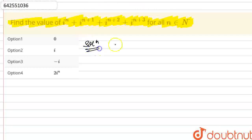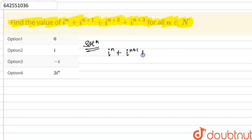We need to choose one correct option. What we need to find is the value of iota raised to the power n, plus iota raised to the power n+1, plus iota raised to the power n+2, plus iota raised to the power n+3.